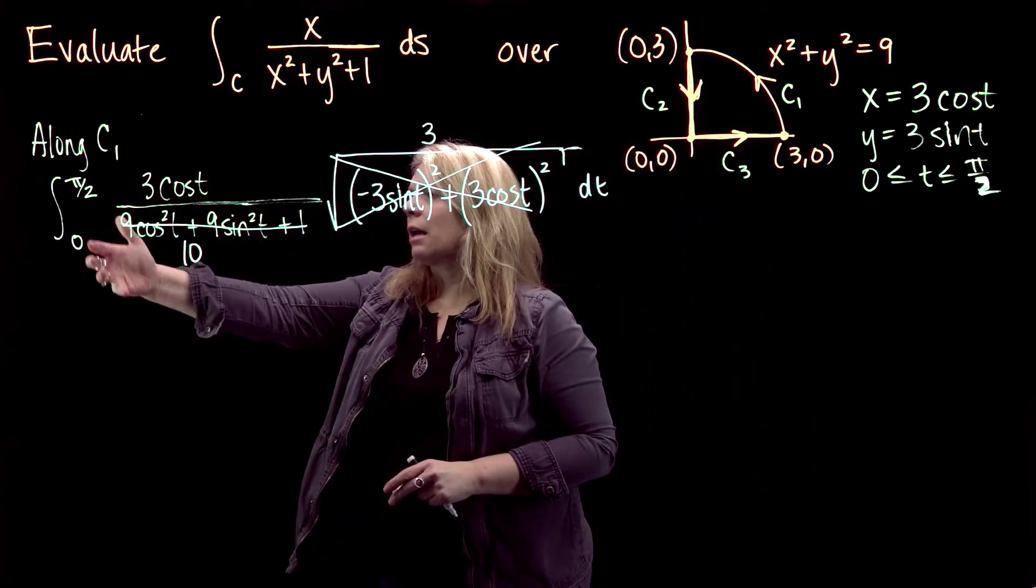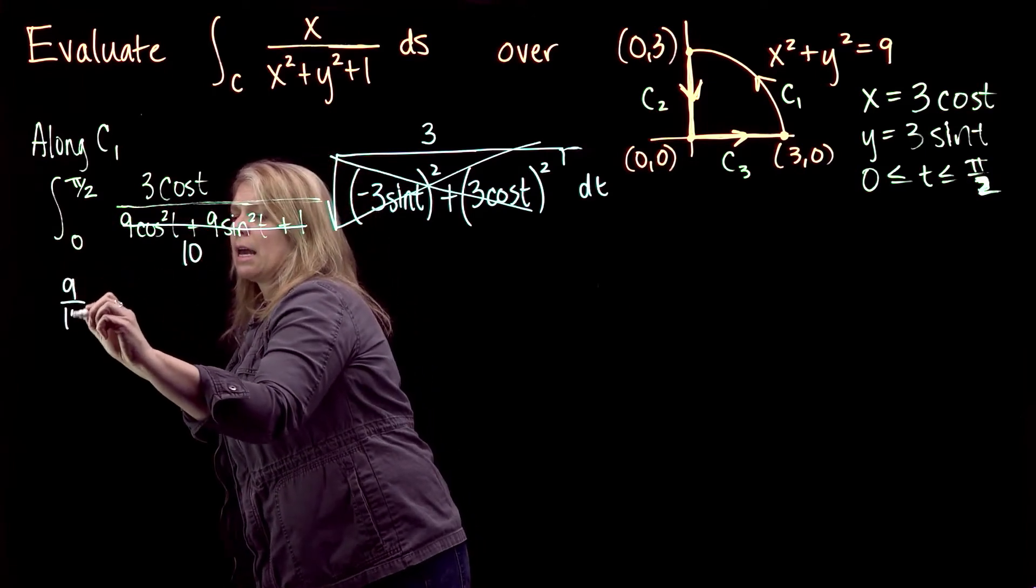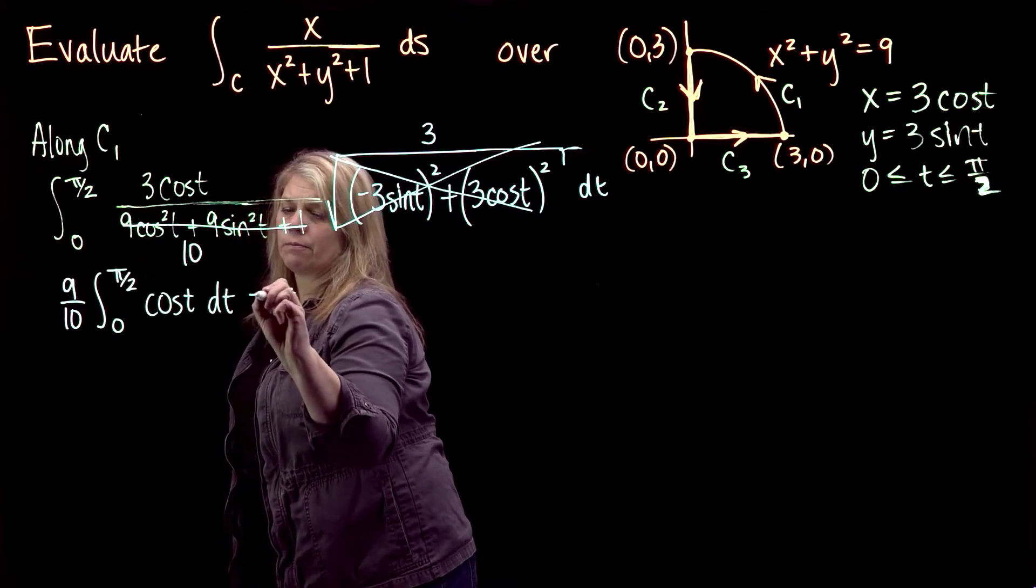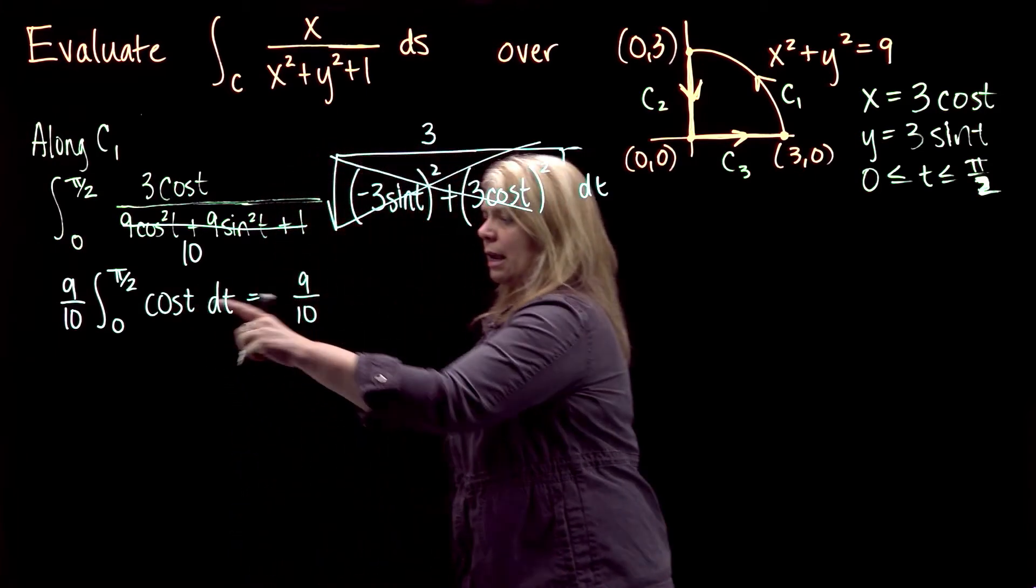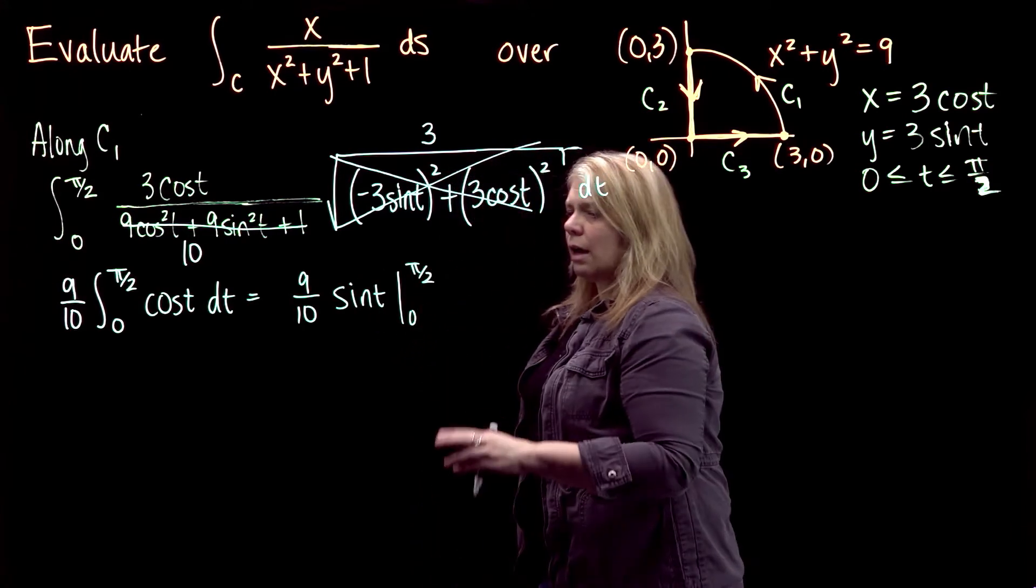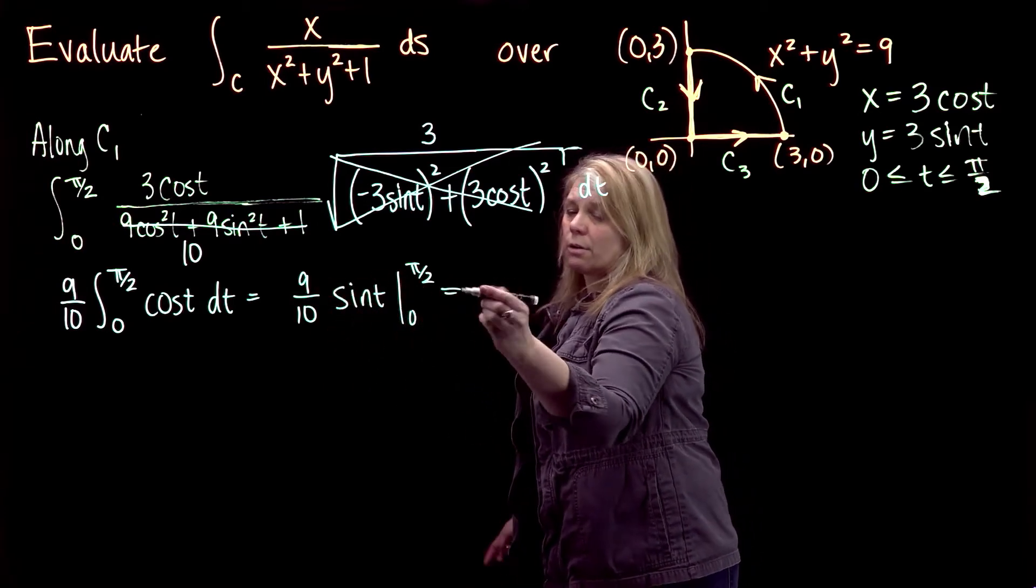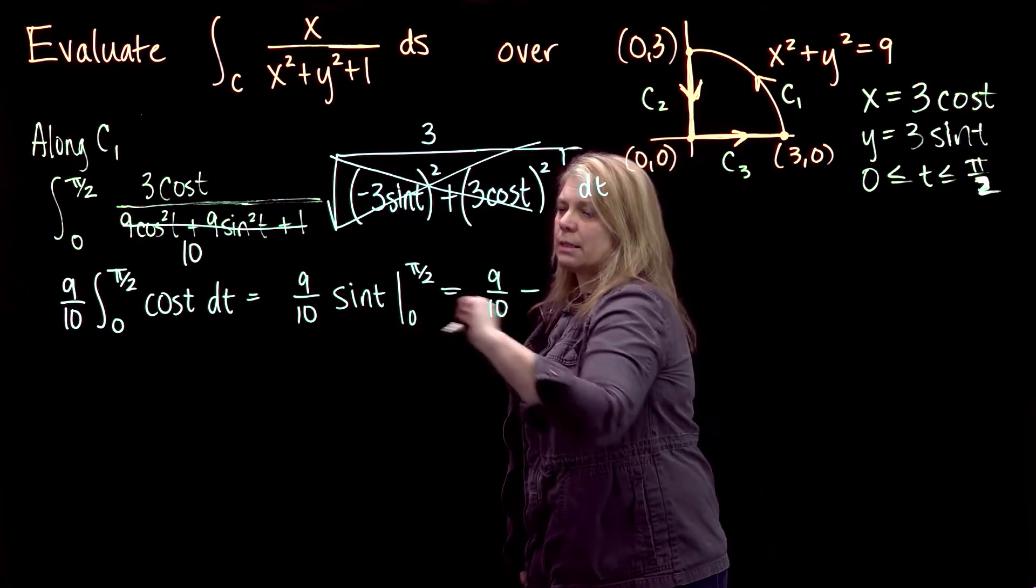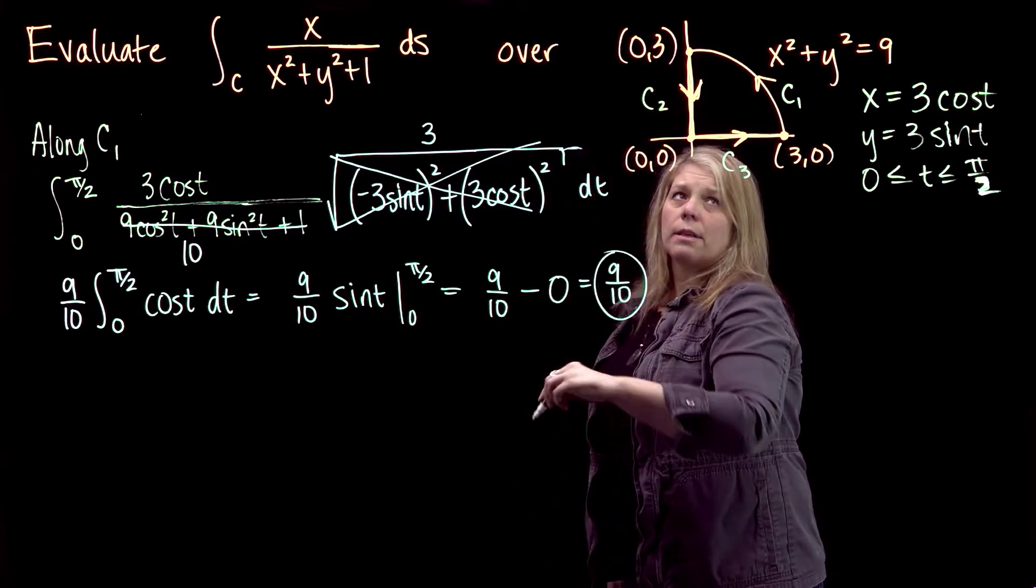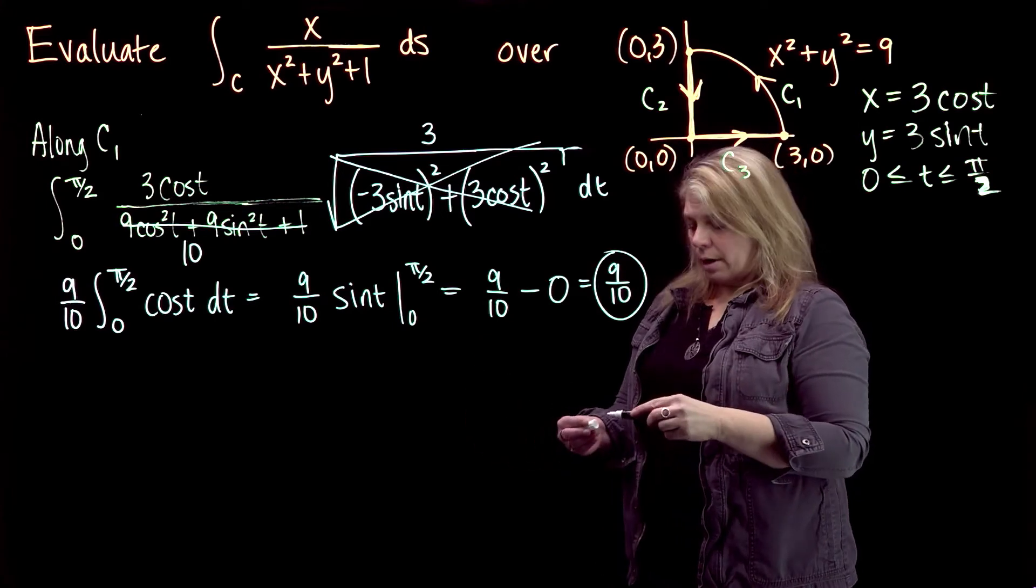I have some constants I can pull outside of the integral. We will have 9/10 times the integral from 0 to pi over 2 of cosine t dt. The integral of cosine t is sine t from 0 to pi over 2. When I put in pi over 2, I'll get 9/10 times sine of pi over 2, so 9/10 times 1. When I put in 0, I'll have 9/10 times sine of 0, which is 0, so I just get 9/10. That is the total value of this function along this arc of the curve.